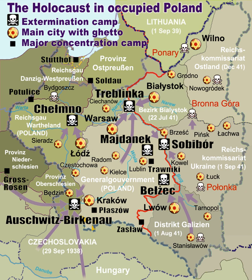By then, the Jews were already confined to new ghettos and interned in Nazi concentration camps along with other targeted groups, including Roma and Soviet POWs. The Nazi Endlösung der Judenfrage — the final solution of the Jewish question — based on the systematic killing of Europe's Jews by gassing, began during Operation Reinhard, after the onset of the Nazi-Soviet War of June 1941.